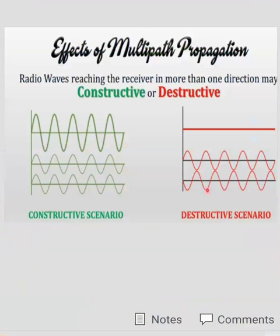Radio waves reaching the receiver from more than one direction may result in constructive or destructive effects. Constructive effect increases the amplitude of the signal, while destructive effect cancels the respective signal. This concludes our discussion on multipath propagation.